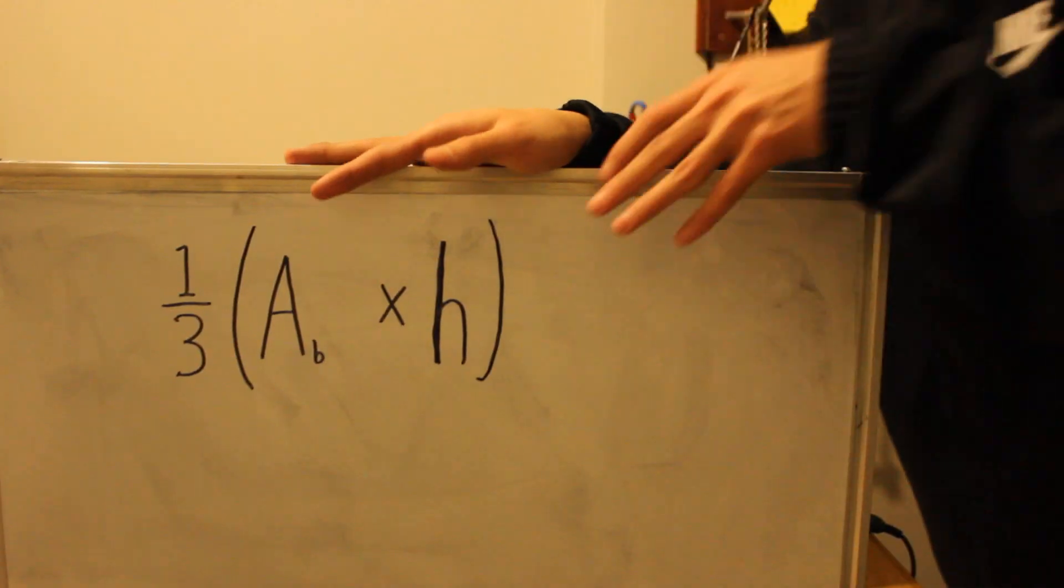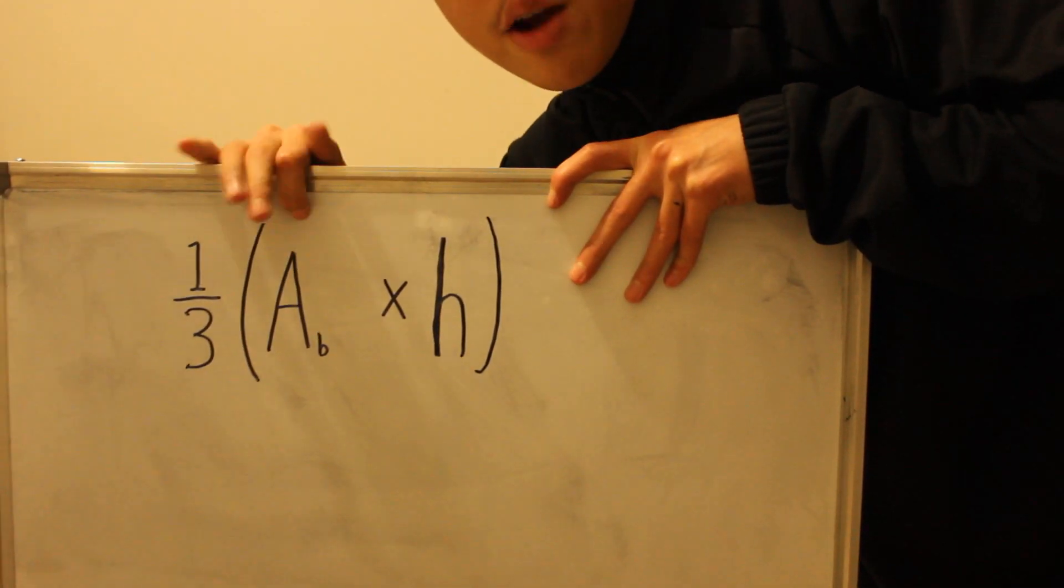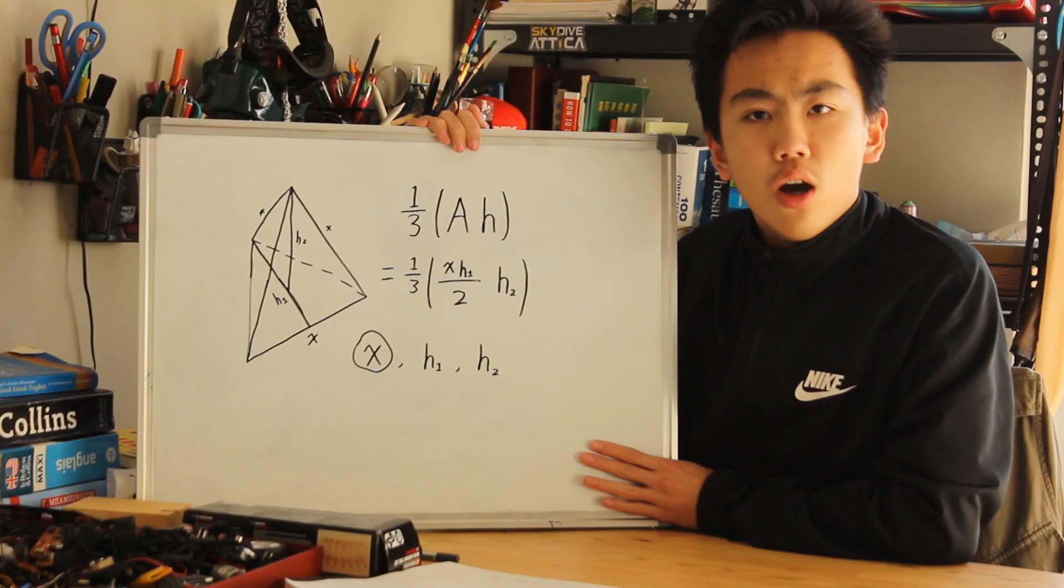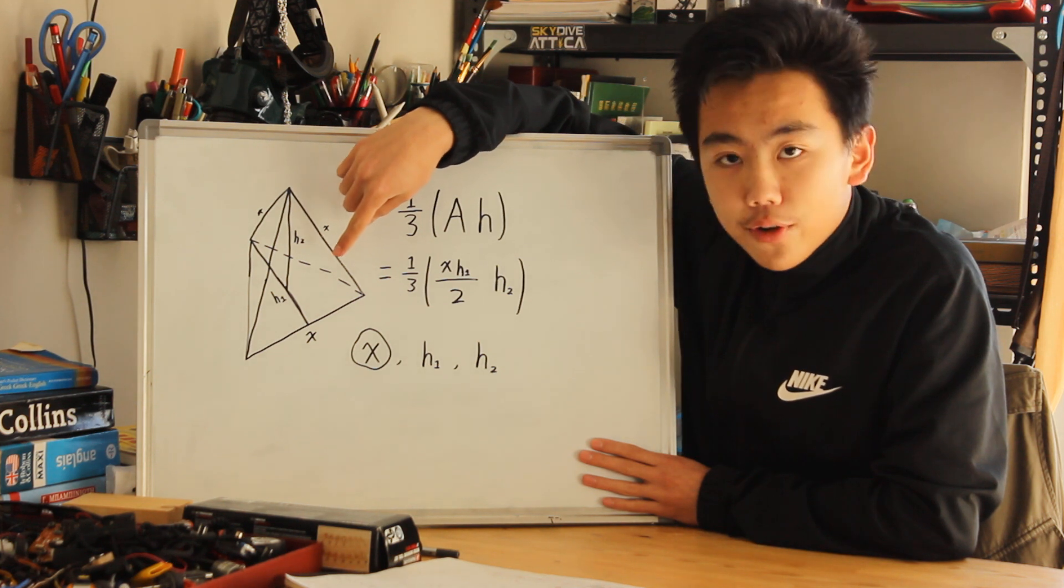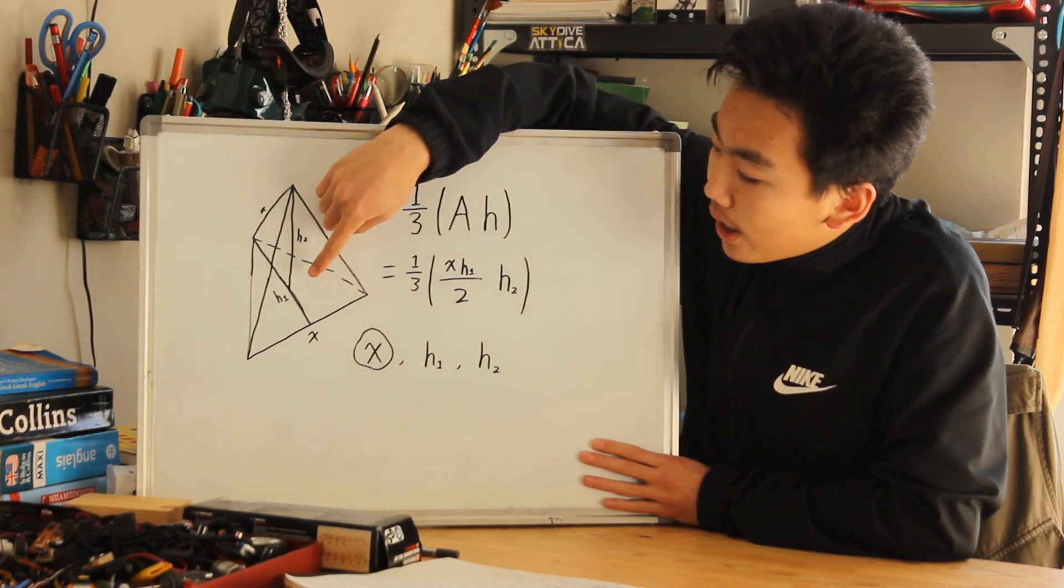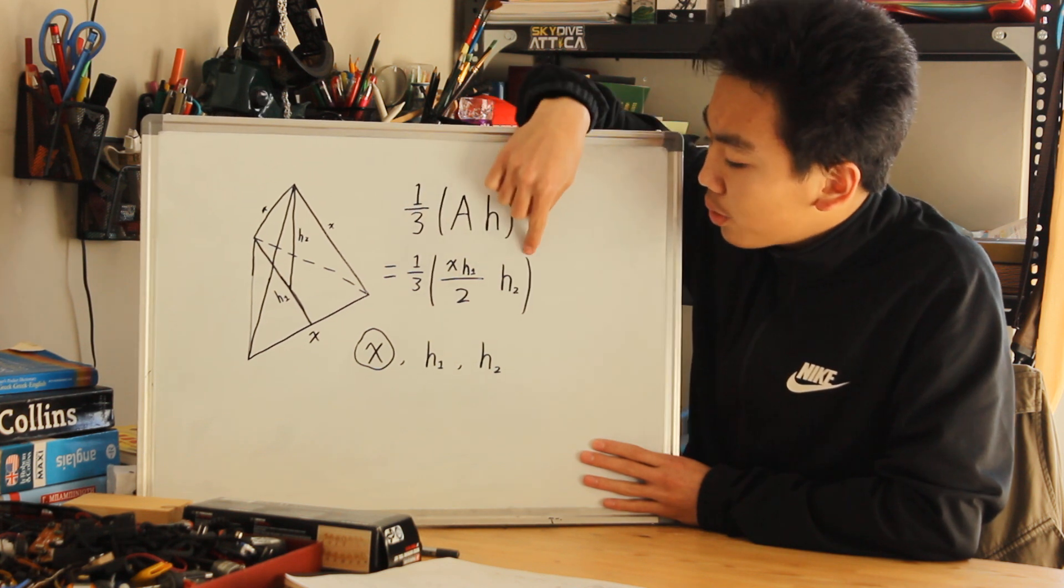The tetrahedron is a pyramid, and the volume of a pyramid is one-third times the area of the base times height. In our case, we've got a triangular base, and the area of a triangle is base times height (the first height, the height of the triangle) over 2. That's the area of the triangle, and we've also got the second height, the height of the tetrahedron.